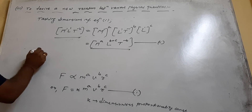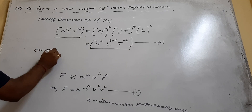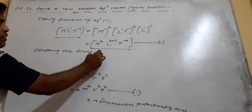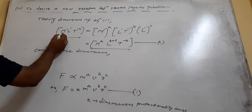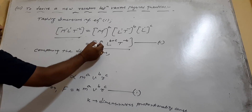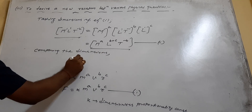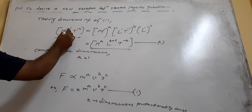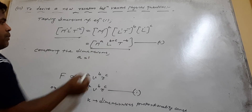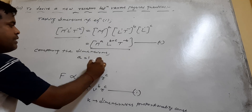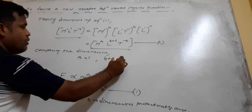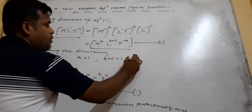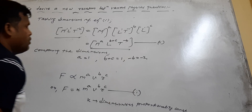Now compare the dimensions of both LHS and RHS. You see M to the power 1 on the left and M to the power A on the right, so A equals 1. Similarly, L to the power 1 on the left and L to the power B plus C on the right, so B plus C equals 1. And T: minus 2 on the left equals minus B on the right, so minus B equals minus 2.